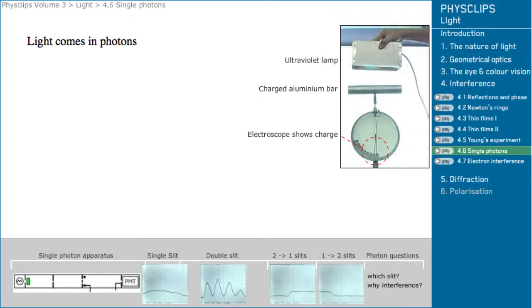We've seen in a previous chapter that light comes in photons. One atom or electron can interact with one photon of light.